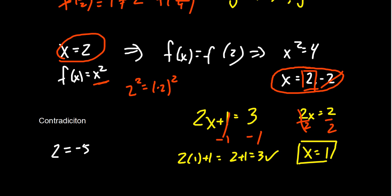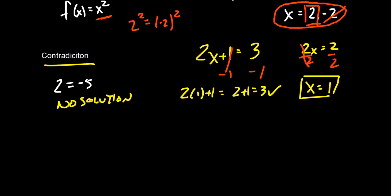Getting back to the idea of a contradiction: a contradiction occurs when you get something that's absolutely false. No assignment of the variables can make this true, such as 2 equals negative 5. In this situation, there is no solution. For example, if you had x plus 2 equals negative x plus x, you might subtract x from both sides. The x cancels on both sides and you're left with exactly that contradiction, which tells you there is no solution.